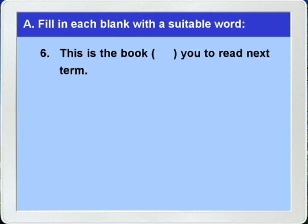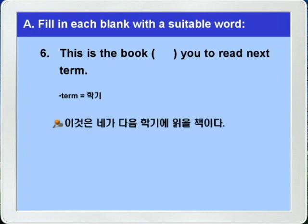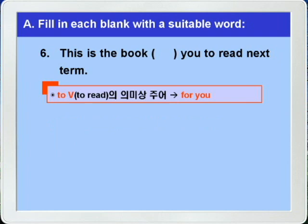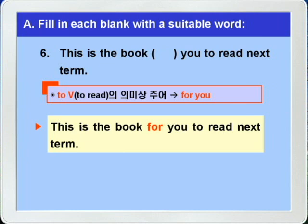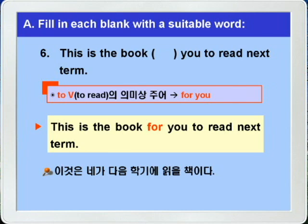6번. 'This is the book for you to read next term.' 이것은 그 책이다. 네가 to read, 읽을, next term 다음 학기에. 이 문장 역시 blank you가 부정사 to read의 의미상의 주어가 되니까, blank에는 for가 들어가면 되겠습니다. 이것은 네가 다음 학기에 읽을 책이다.